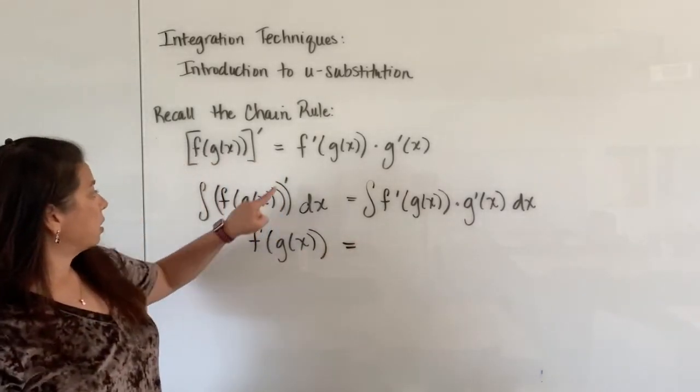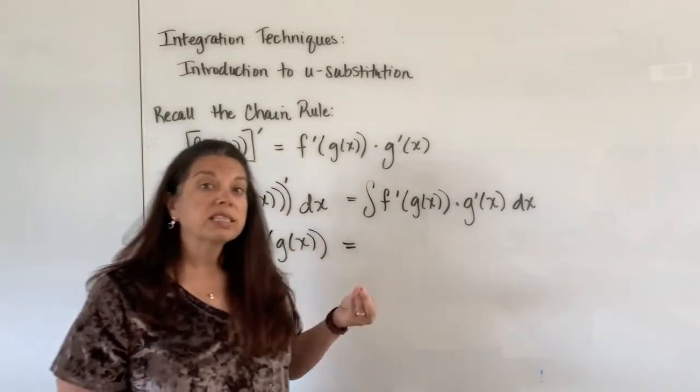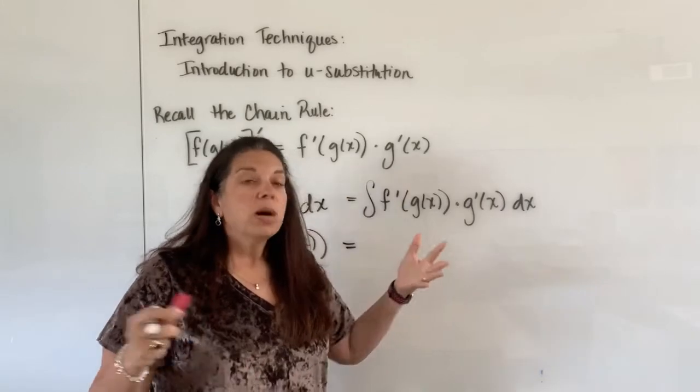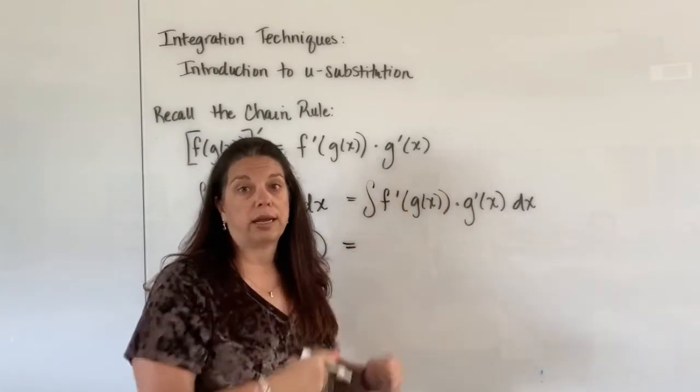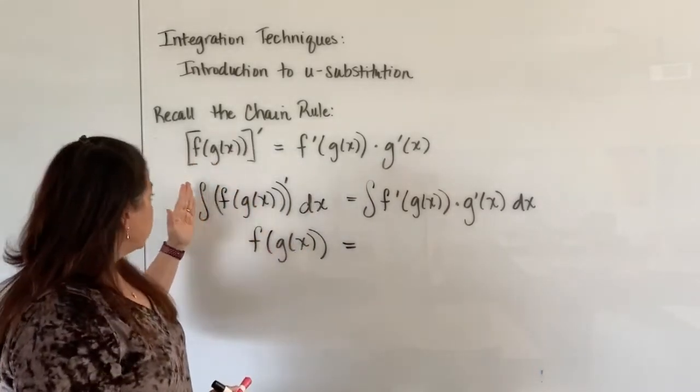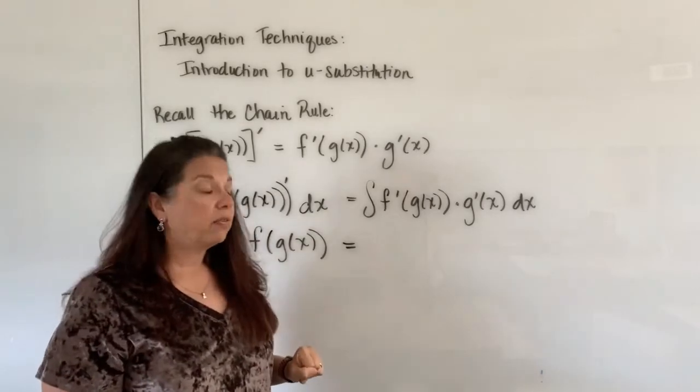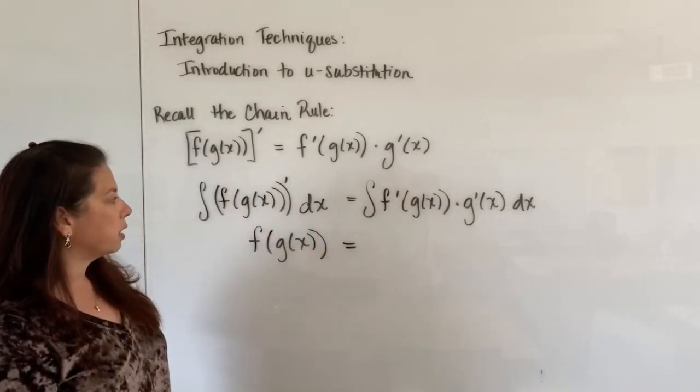Now, just as a reminder, finding the anti-derivative of a derivative is a process that undoes itself, much in the same way that like a square root would undo a squaring of something or subtracting would undo an addition. So an integral undoes a derivative. So that's why I get just f of g of x here on the left side.